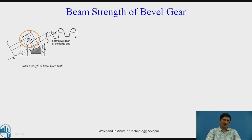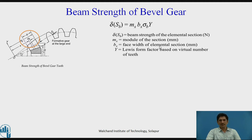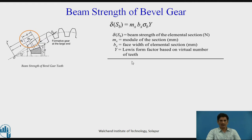We have taken an elemental section under consideration, and for the elemental section we have defined the beam strength. Therefore, delta Sb is taken as mx × bx × sigma_b × y, where delta Sb represents beam strength of the elemental section in Newtons, mx is the module at the section, bx represents the face width of the elemental section in millimeters, and y is the Lewis form factor based on virtual number of teeth. It is very important that y should be taken on virtual number of teeth, not based on actual number of teeth.